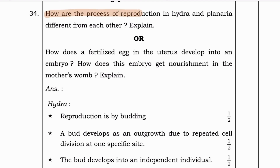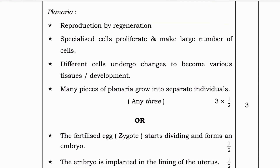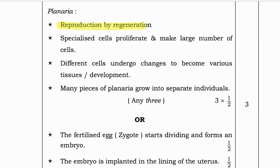Next question: How are the processes of reproduction in hydra and planaria different? Hydra reproduces by budding — a bud develops as an outgrowth due to repeated cell division at one specific site and develops into an independent individual. Planaria reproduces by regeneration — specialized cells proliferate and make a large number of cells; different cells undergo changes to become various tissues, and many pieces of planaria grow into separate individuals.